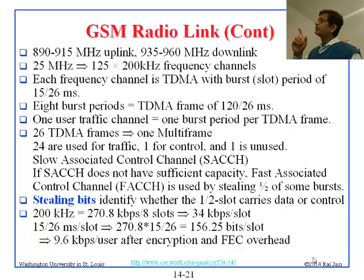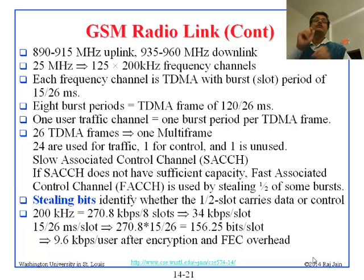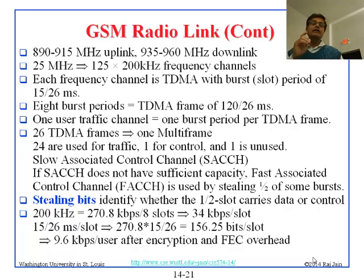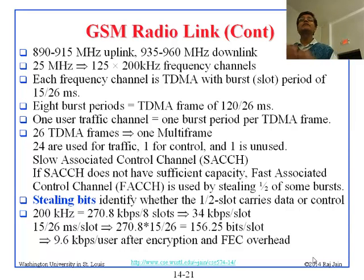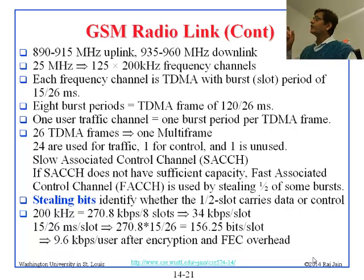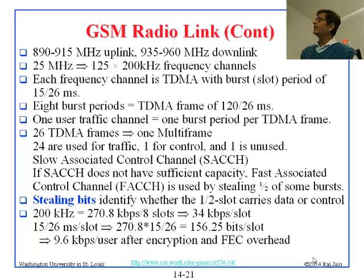One user traffic channel is one burst period. Basically, each user just gets that burst, and it is called a traffic channel. Why traffic channel? Because the other part is the control channel. So 26 frames become one multi-frame: 24 are used for traffic, one for control, and one is not used.